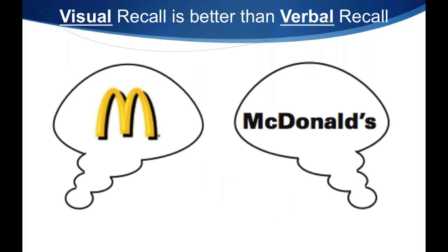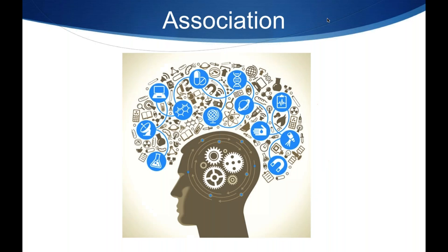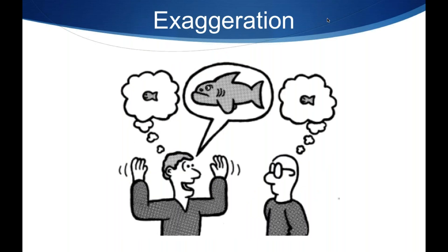Your visual recall is better than your verbal recall. Think about companies — not only will they have a name, they'll also have a logo or even a mascot. McDonald's is a good example of this. The process of visualization, picturing things in your mind's eye, can be a helpful way to commit things to memory. Association is another thing that impacts your memory deeply — you remember things when you associate them to other things you already know. Exaggeration also helps: anything that's out of the ordinary, weird, or funny is always more memorable.